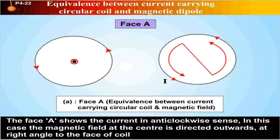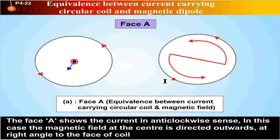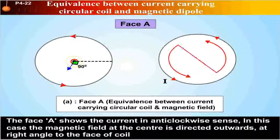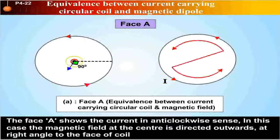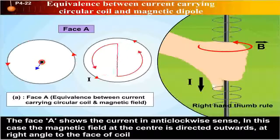The face A shows the current in anti-clockwise sense. In this case, the magnetic field at the center is directed outwards at the right angle to the face of the coil, as shown in this figure. This is according to the right-hand thumb rule.